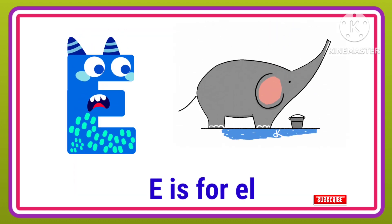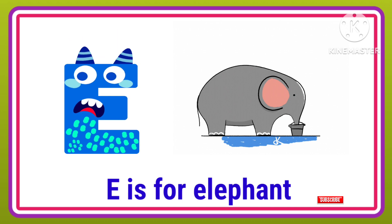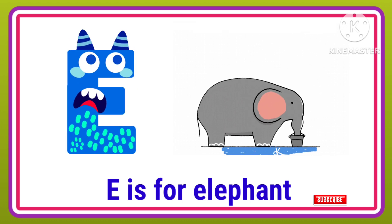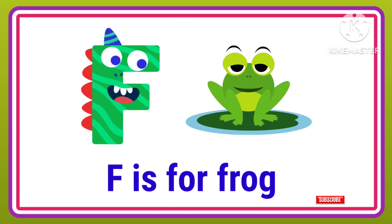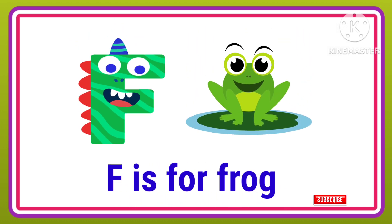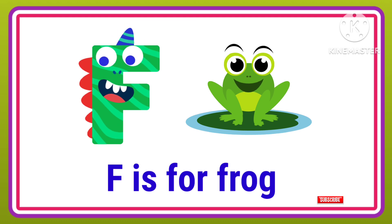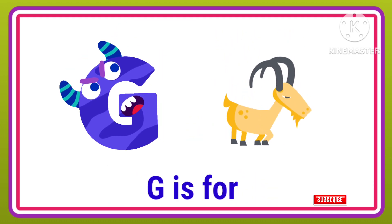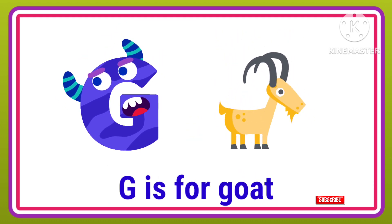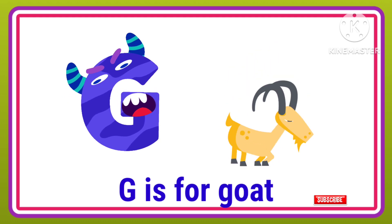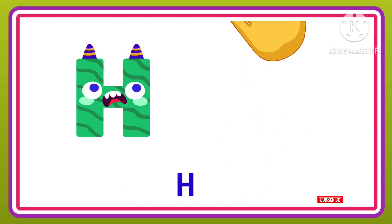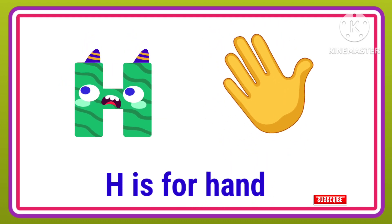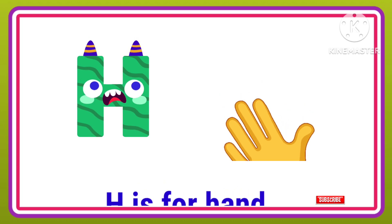E is for Elephant, E-E-Elephant. F is for Frog, F-F-Frog. G is for Goat, G-G-Goat. H is for Hand, H-H-H-Hand.